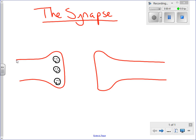When the electrical impulse, the nerve impulse, reaches the synapse which is the gap, the impulse cannot cross the gap.